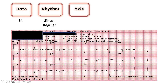Next we look at our axis. We always look at leads I and AVF. Lead I is our left thumb — the majority of the QRS vector is up, so our left thumb is up. AVF is mostly down — the majority of the QRS vector is down in AVF, so our right thumb is down. That leaves us with left axis deviation.